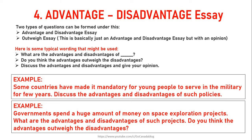The fourth type of essay is an advantages and disadvantages essay. Two types of questions fall under this: a simple advantages and disadvantages essay, or an outweigh essay where you also give your opinion. Typical wording includes: 'What are the advantages and disadvantages?', 'Do you think the advantages outweigh the disadvantages?', or 'Discuss the advantages and disadvantages and give your opinion.' For example: 'Some countries have made it mandatory for young people to serve in the military for a few years. Discuss the advantages and disadvantages of such policies.' Here you list advantages first and then disadvantages.